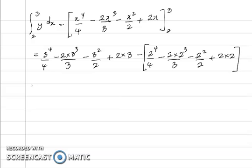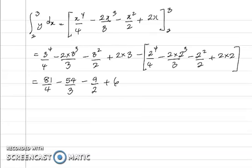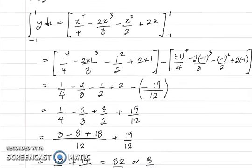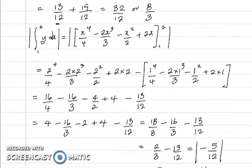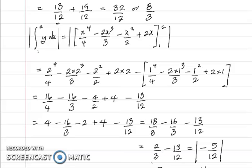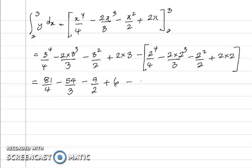On the left we end up with 81 over 4, minus 54 over 3 — since 3 cubed is 27 times 2 is 54 — minus 9 over 2, plus 6. The right-hand side was already worked out in the previous example, where we replaced x with 2 and got 2 thirds. You can see that on the left from the previous calculation — the final value was 2 thirds — so this becomes minus 2 thirds.